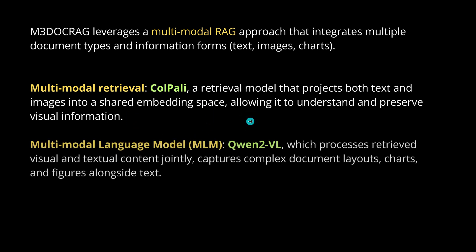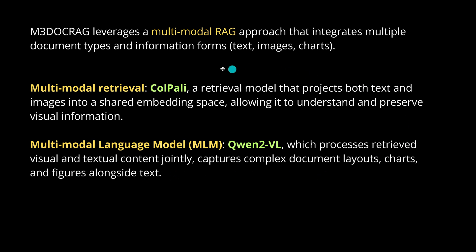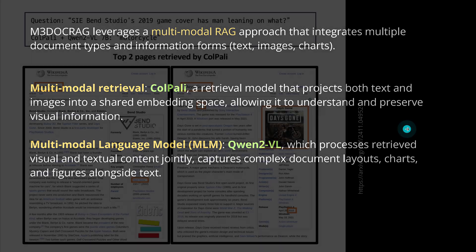This allows other models to understand and work with visual information encoded in the vector space. Then they use a very powerful vision language model, QWen2 Vision Language, which processes the retrieved visual and textual content jointly. It captures complex document layouts, charts and figures, alongside the query text — a simple two-step process.